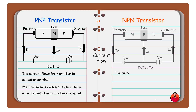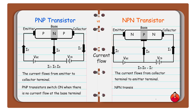In NPN transistor, the current flows from collector terminal to emitter terminal. The NPN transistor switches on with the increase in current in the base terminal.